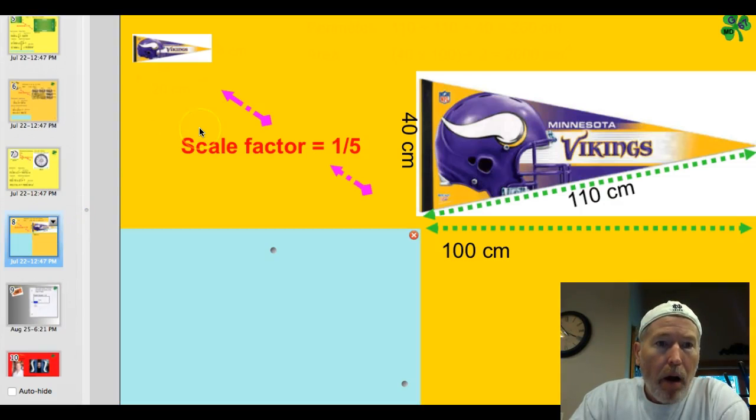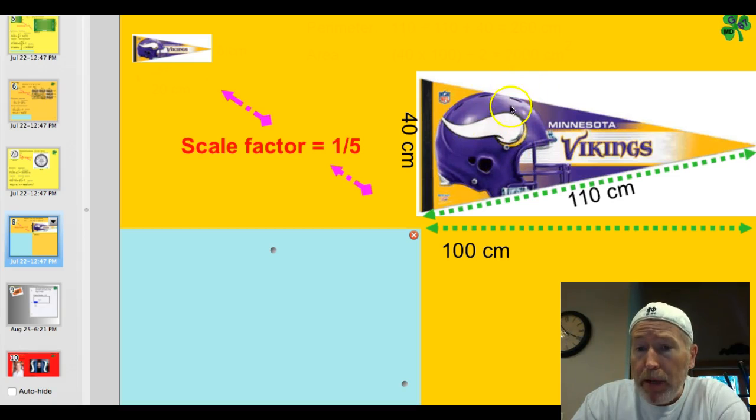Time for you to try one. Now, I did a circle. You should be able to go and find the size of this smaller pennant. Given all the measurements here of this Viking's pennant on the large one, in a scale factor of 1 fifth, find the perimeter and area of this smaller pennant. Go ahead and pause the video.